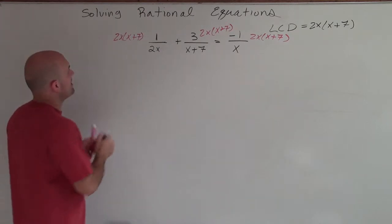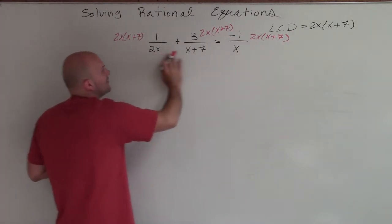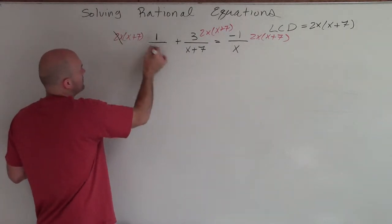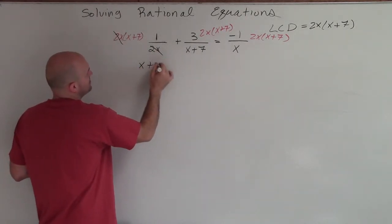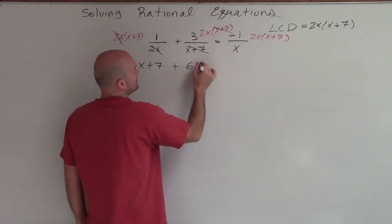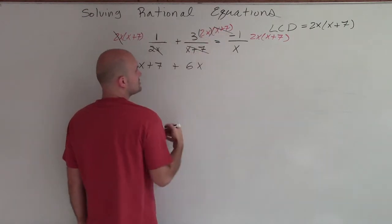Because if I multiply these all in the numerator and I have all my different denominators, then these are going to divide out to 1. So I'm just going to be left with x plus 7 plus, here, my x plus 7's multiply out. So I'm left with 3 times 2x, which is 6x.